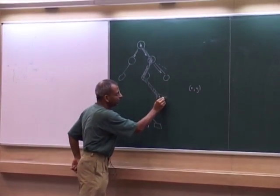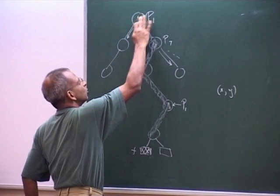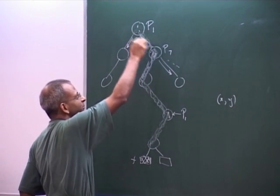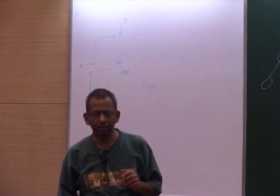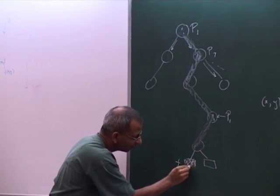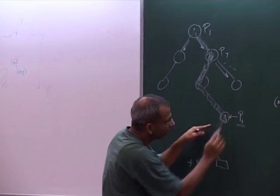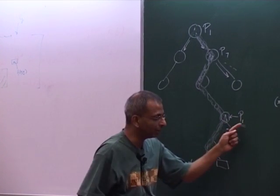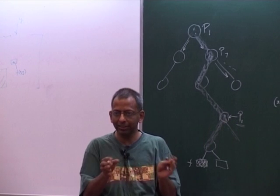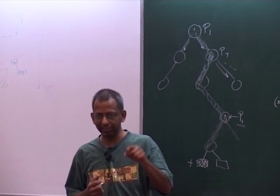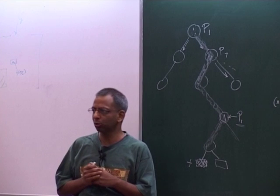Multi-party protocols also correspond to trees, but each node is labeled by which player speaks next. Whenever there is a node labeled p1, the decision of whether to go left or right must be a function of x2 through xk, because p1 doesn't have access to x1. So we have generalized the two-party setting to k players.